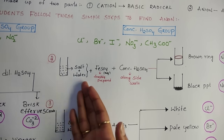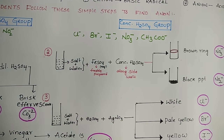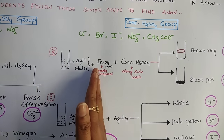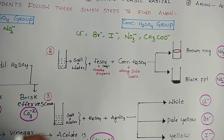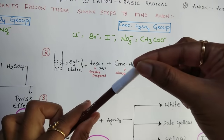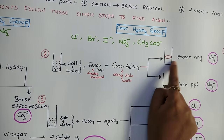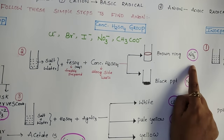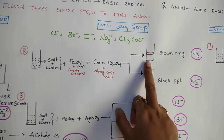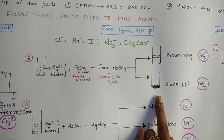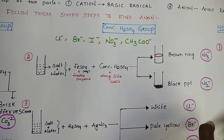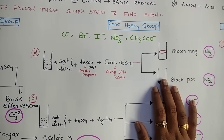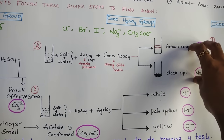If you didn't get white precipitate in test one, take another dry test tube, add salt and water, then add freshly prepared ferrous sulfate (available in your lab) and add concentrated H₂SO₄ slowly through the walls of the test tube using a dropper, keeping the test tube slanted. If a brown-colored ring appears, it indicates nitrate ion (NO₃⁻). If only a black precipitate forms, it indicates nitrite ion (NO₂⁻). If there is no brown ring or black precipitate, these two anions are not present.